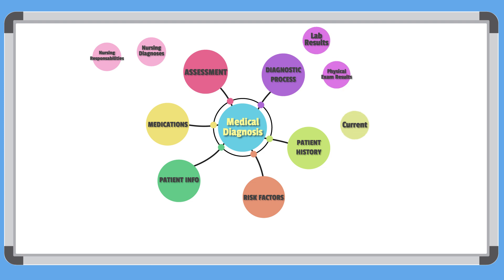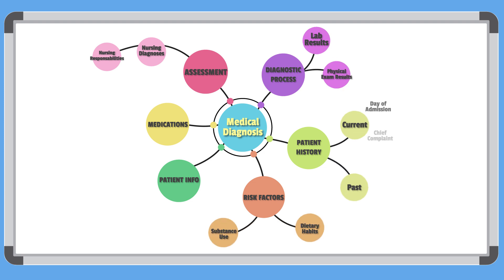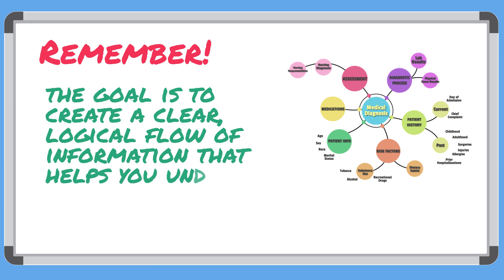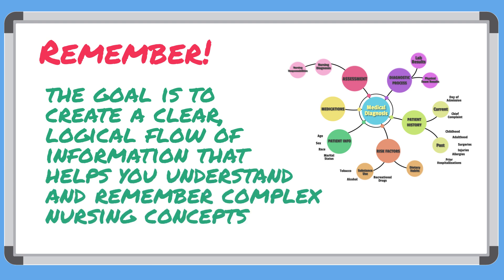Step three is simply listing key info for each subsection. Fill in the details for each category — for example, under patient info you might include age, sex, race, and even marital status. Remember, the goal is to create a clear, logical flow of information that helps you understand and remember complex nursing concepts.